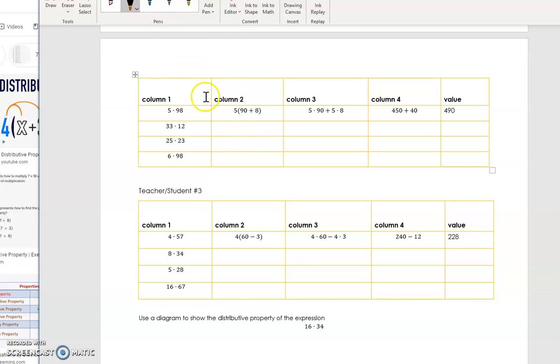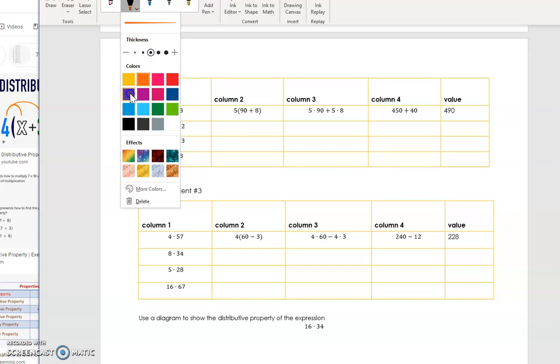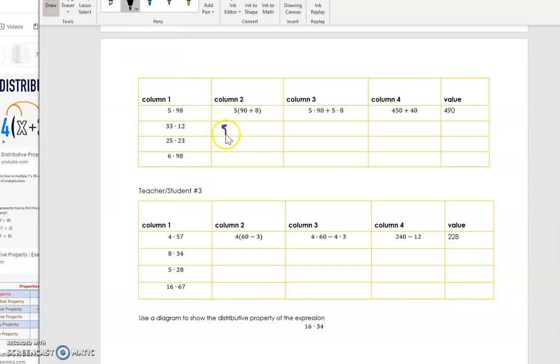So the 33 on the outside is going to stay 33. And then the 12, I'm going to break up into two pieces. So 12 can be written as 10 plus 2.